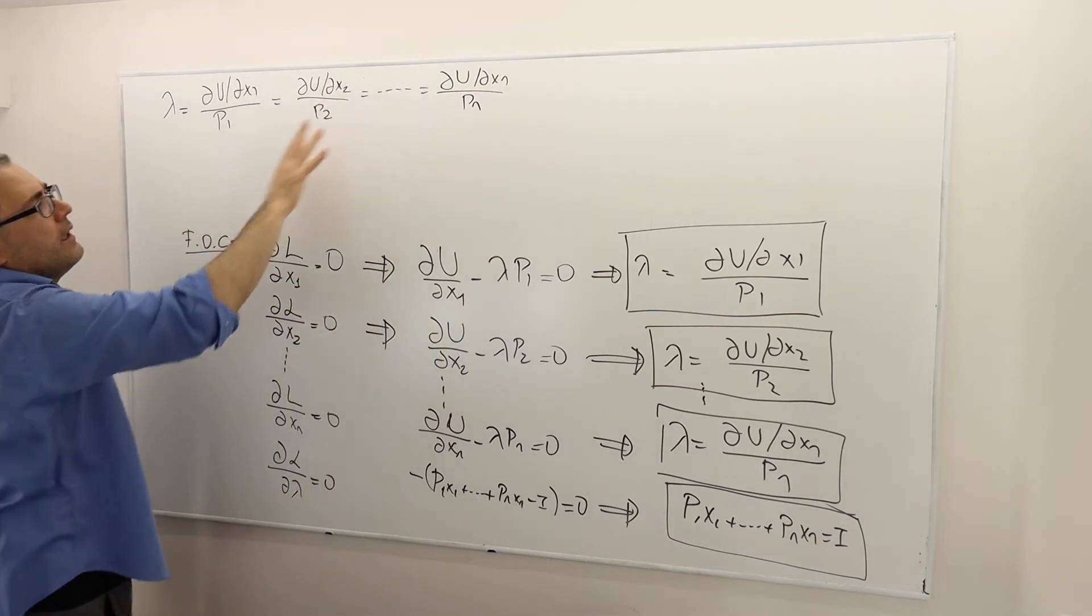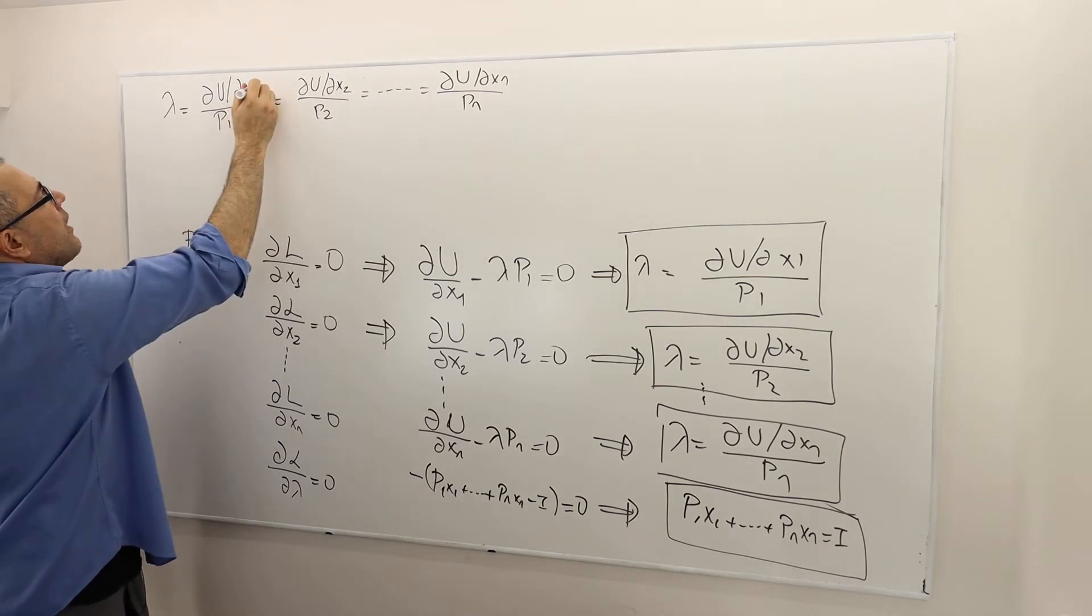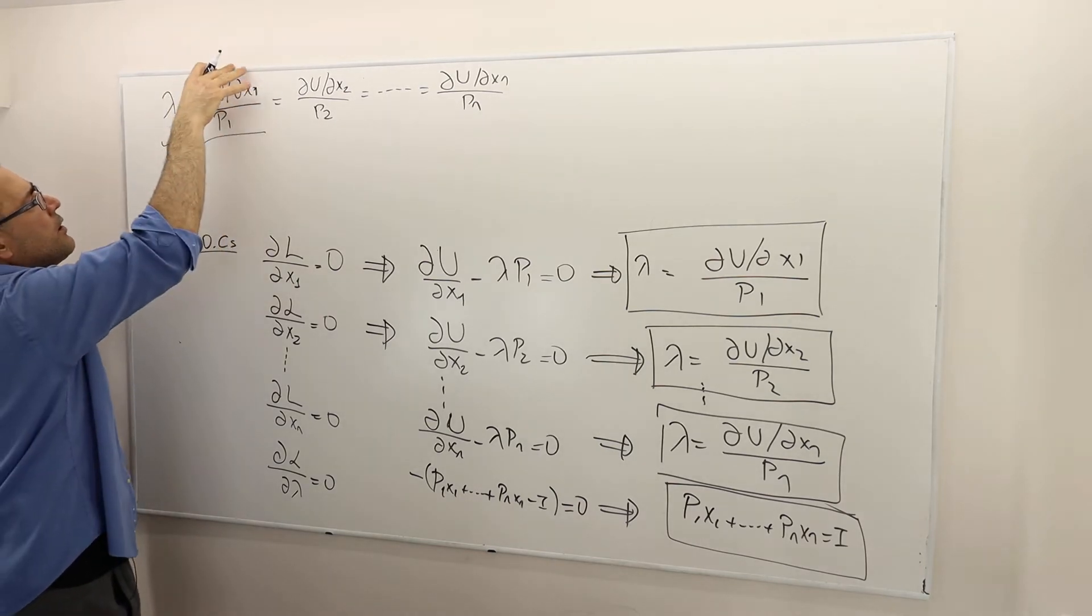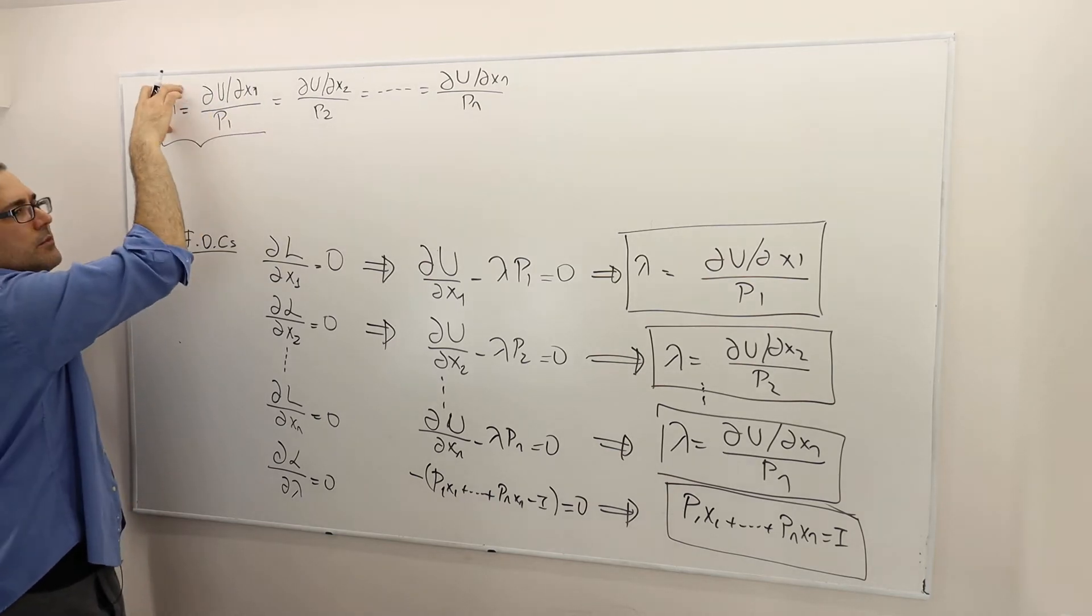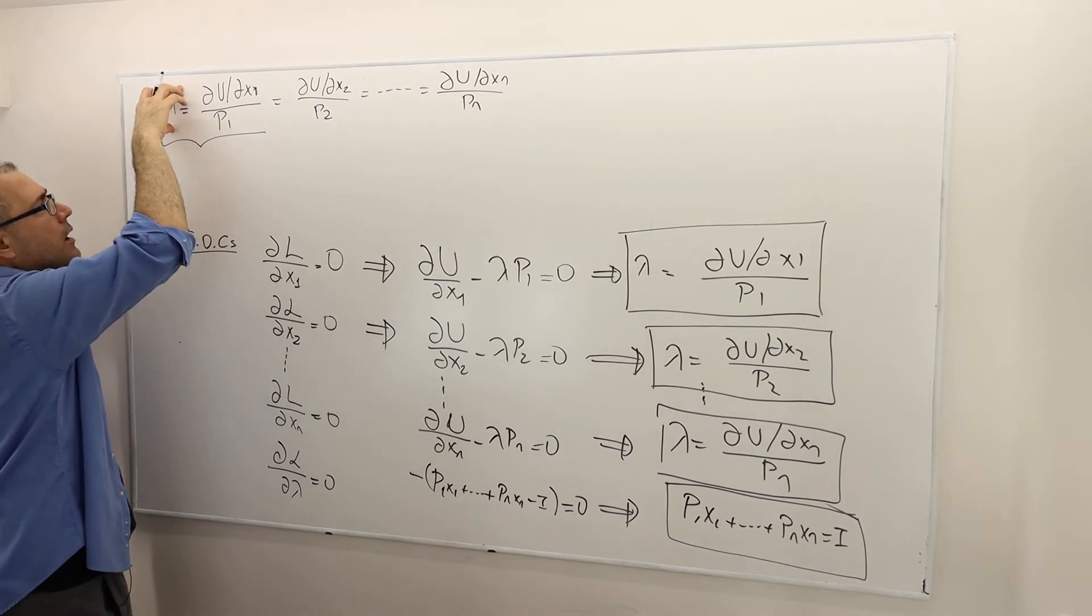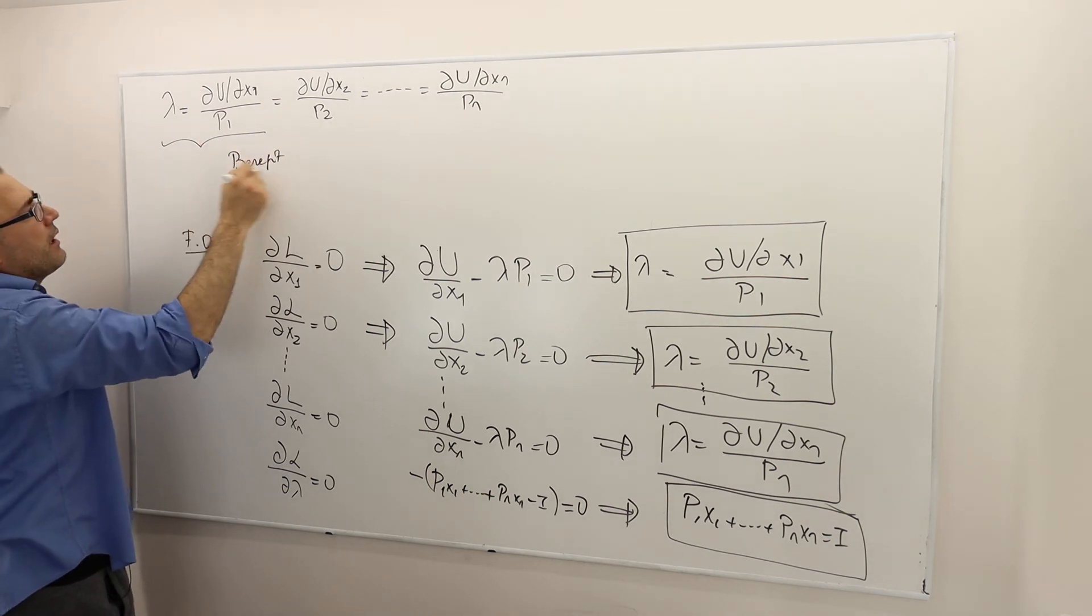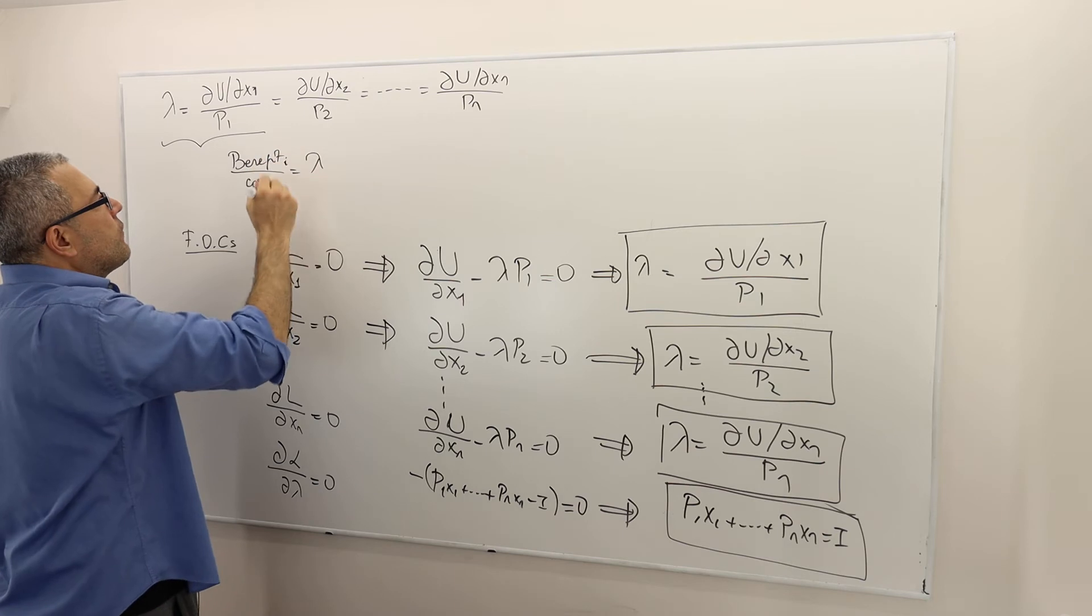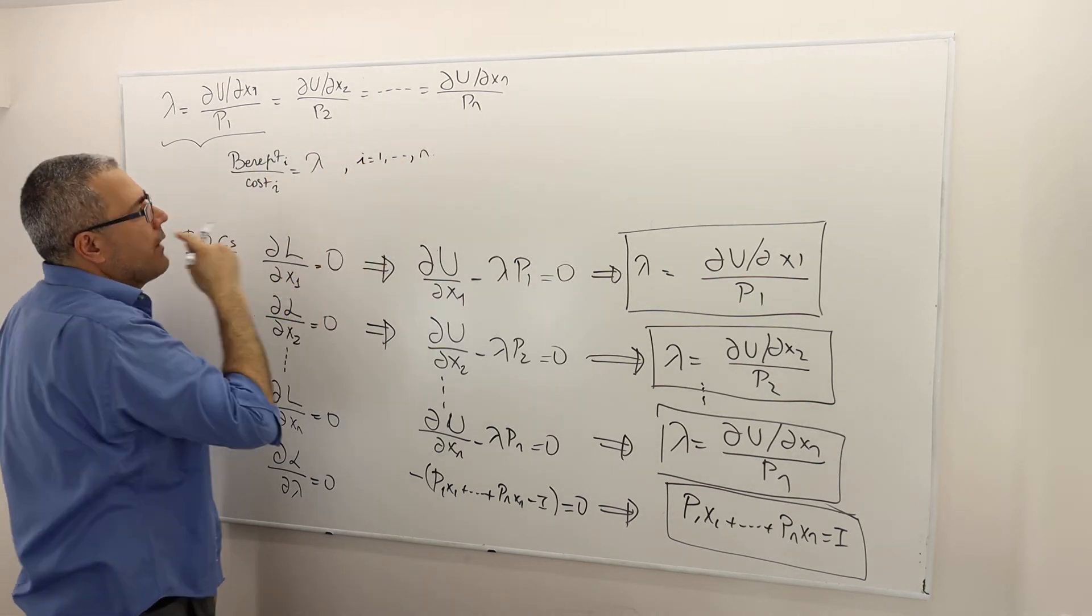That means if you forget about all the x2, xn terms, just look at this del u del x1 divided by p1 equals lambda ratio. What you see is basically the marginal utility or marginal benefit divided by marginal cost is some constant number, some lambda coefficient. So it's marginal benefit divided by marginal cost equals lambda. And for the optimal solution, for every good, this has to be true from 1 all the way to n.